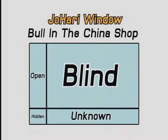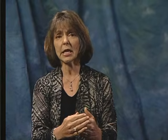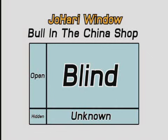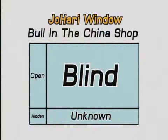The third extreme is called the bull in the china shop. If you picture a bull just charging through, oblivious to his surroundings and breaking china as he goes, that's a bit similar to this window. In this case, the horizontal line shows I've told you lots and lots about me, so the hidden pane is very small. But the vertical line shows that I don't ask for your views about me, and even if you offer them, I don't really listen — so that line stays close to the left side of the window. The downside is that the blind pane is very large, because I don't want to know what you think about me.